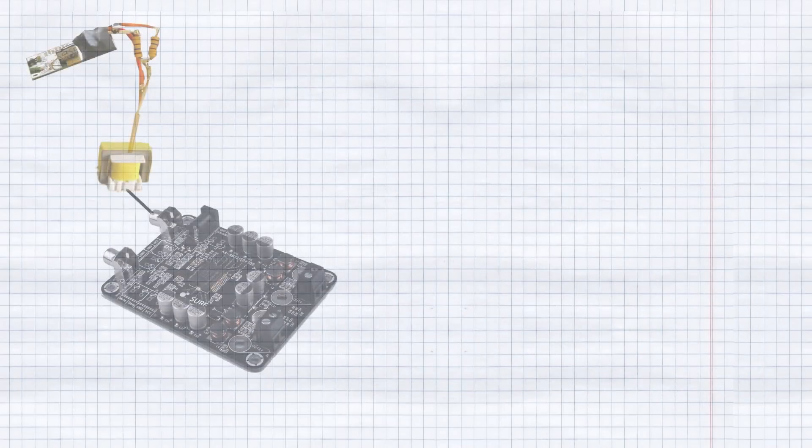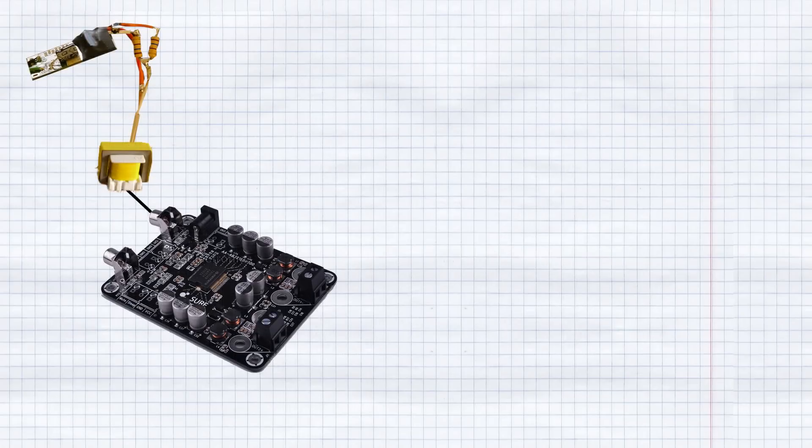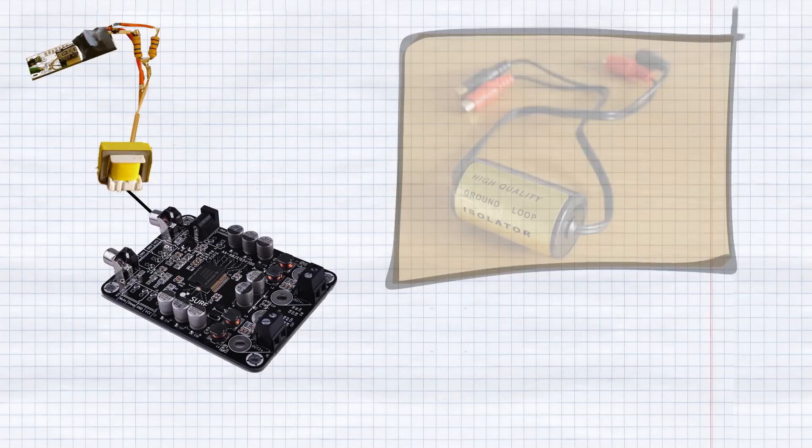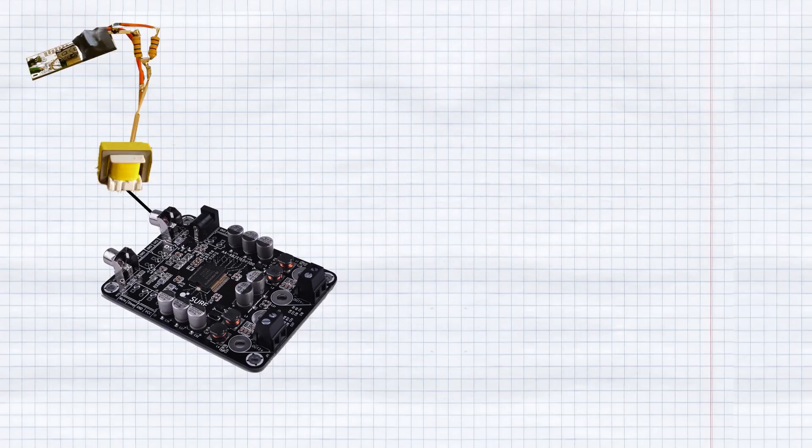So for this, what happens is that the mono signal enters channel 1 of the amplifier through a 1:1 ratio audio transformer. This transformer is from a cheap ground loop isolator and is there to eliminate the ground loop that is caused by the Bluetooth module and amplifier sharing the same ground. The signal is then amplified and sent to the midrange and treble drivers.